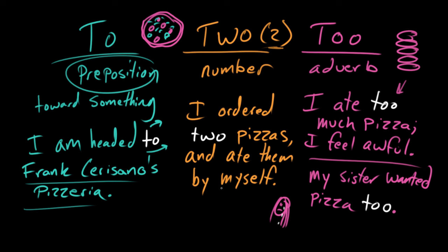So, in order to keep these three very similar sounding words straight, here's what you need to remember: To, T-O, is a preposition that means towards something, as in 'I am headed to Frank Serrazano's Pizzeria'. T-W-O is the number two, as in 'I ordered two pizzas'. Finally, T-O-O, the adverb, means either there's an overabundance—'too much'—or 'in addition', as in 'my sister wanted pizza too'.